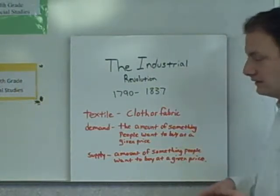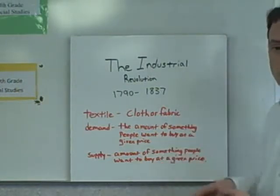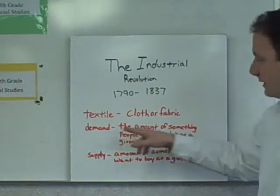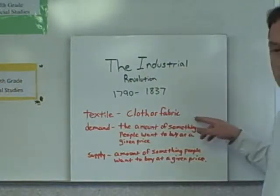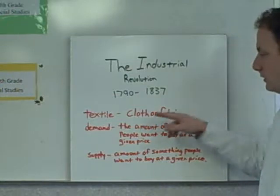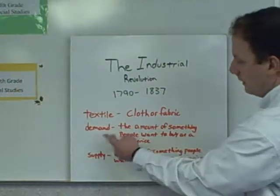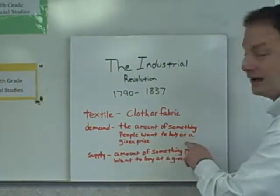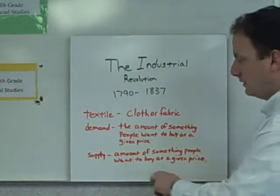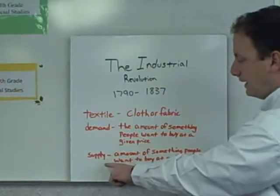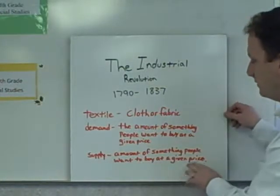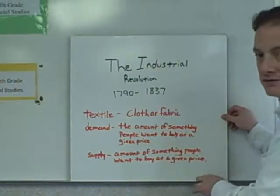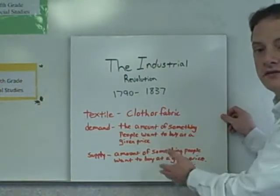I've written the key terms in red for you. Number one: textile — textile is cloth or fabric. Demand is the amount of something people want to buy at a given price. Supply is the amount of something people want to buy at a given price.